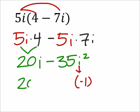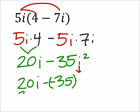So I have 20i minus, that's a 35 times negative 1, which also would make this a negative 35. And that changes this to 20i plus 35.